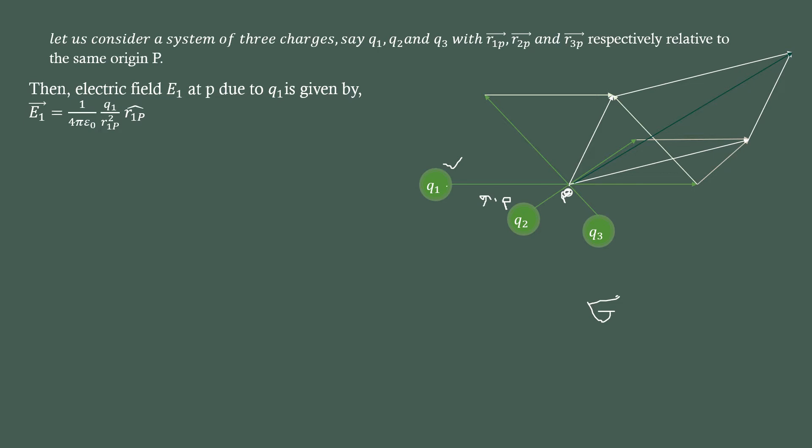The second charge particle's electric field, which is nothing but E2 is equal to q2 divided by r2 square. Similarly, the third charge particle, E3 is equal to q3 divided by r3 square.